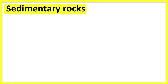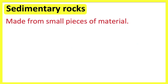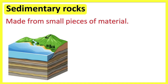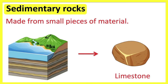Sedimentary rocks are made from lots of small pieces of material, such as small rocks, plant or animal remains. They are formed from sediment that has settled at the bottom of lakes, seas and oceans. This sediment has been compressed over time and the rocks form layers on top of one another. Fossils are mostly found in sedimentary rocks. An example of a sedimentary rock is limestone.